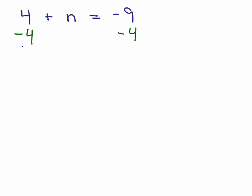I'm going to do it up and down again, but again, it's up to you if you'd like to do it the other way, going across. So, 4 - 4 is 0, so I've got n = , and then over here we've got, we're adding, we're adding -9 and -4, so that's -13.